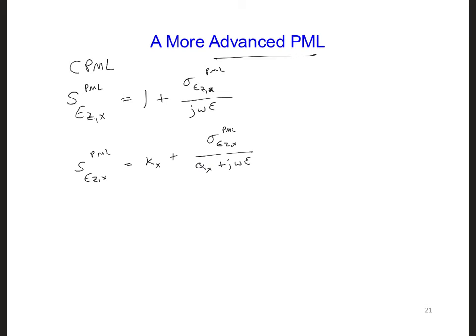So this S tensor coefficient gives us the ability to set two more parameters within the PML, alpha and kappa.